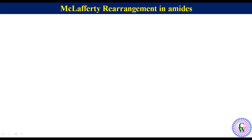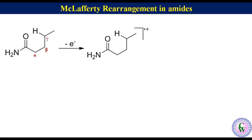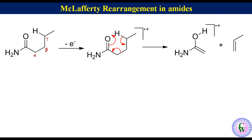McLafferty rearrangement in amides. Let's take the example of pentanamide. It has gamma hydrogen. Removal of one electron will give a radical cation which after McLafferty fragmentation will give the McLafferty fragment and a propene molecule. The m/z value of the McLafferty fragment is 59.